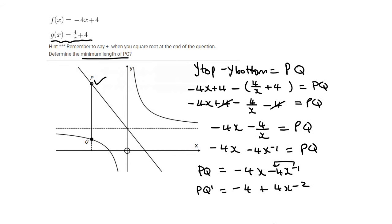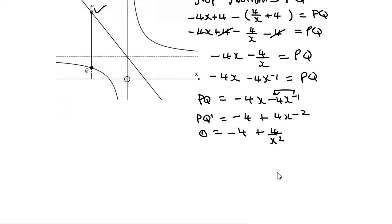To find minimums and maximums, we make the first derivative equal to 0. Then I'm going to put this x at the bottom, so it's going to become 4 over x to the 2. Now take this 4 over, multiply the x squared over, so it's 4x squared equals 4. Divide both sides by 4, so x squared is 1. Then when you take the square root, please remember to always say plus and minus 1.